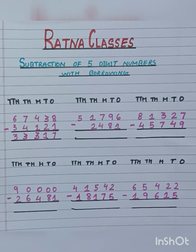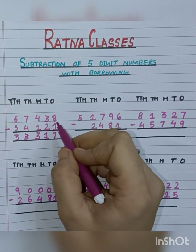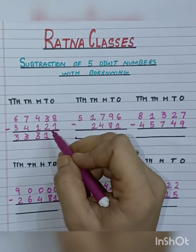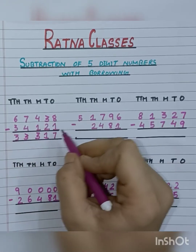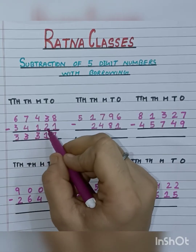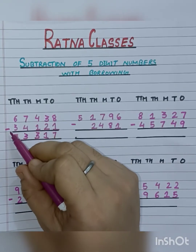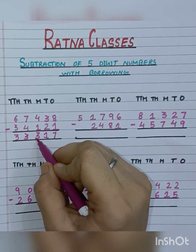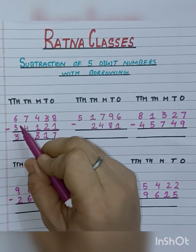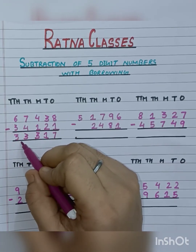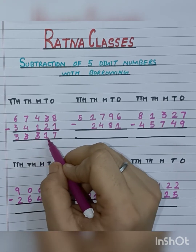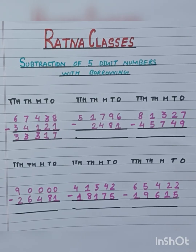So let's start. I have already solved this one for you, so let's once again verify this. That is 8 minus 1 is 7, 3 minus 2 is 1, 4 minus 1 is 3, 7 minus 4 is 3, 6 minus 3 is 3. So we got our answer, that is 33,317. Let's move to the next sum.